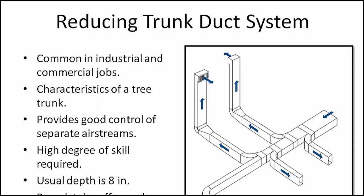Note that the trunk duct and the branch ducts shown here are rectangular, and the usual duct depth is 8 inches. The branch ducts can be round, which require different types of fittings at the branch takeoff points. A branch takeoff fitting connects a branch to the trunk — it is the fitting at which the branch duct takes off from the trunk. It is possible to mix both round and rectangular ducts as your takeoffs.